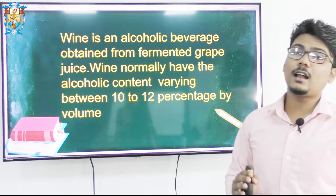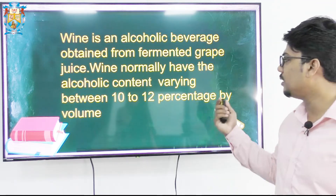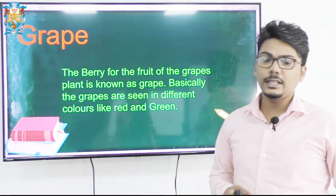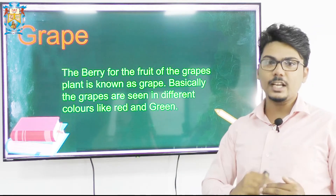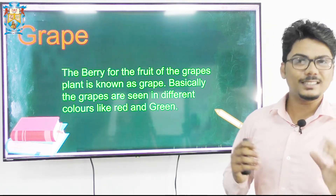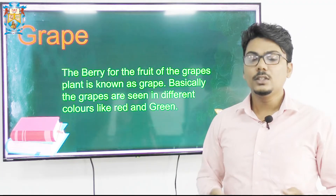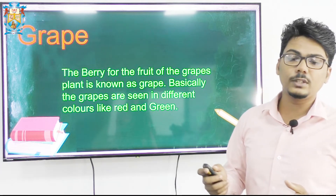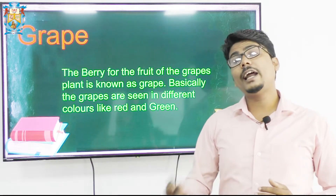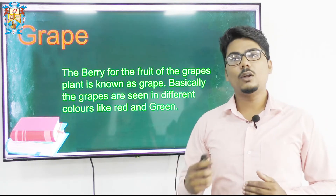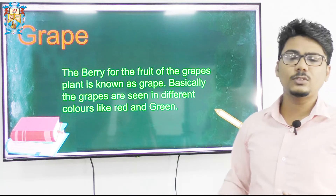Wine is an alcoholic beverage made out of fermented grape juice. Now, what is a grape? Grape is a berry or fruit which comes from the vine — V-I-N-E — which means the grape plant. The fruit of the grape plant is known as a grape. Grapes are seen in different colors like red and green. We normally call green grapes as white grapes, and there are various other color varieties available as well.